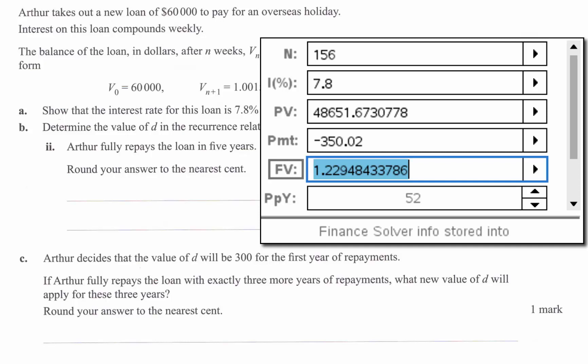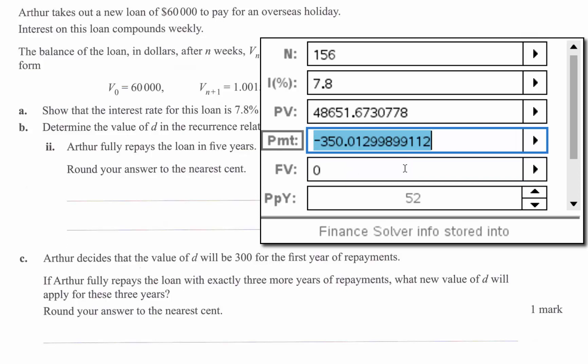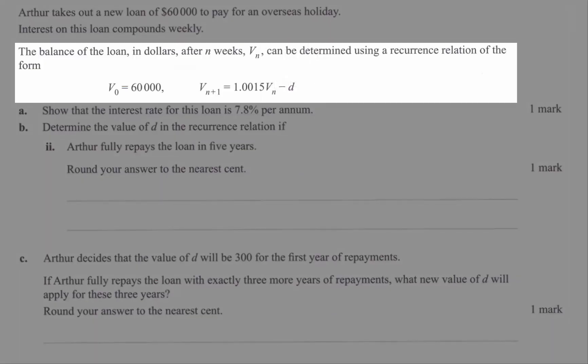So as for what the correct answer is, basically there is no correct answer to this question because it's not like the actual value of D. So I imagine what some people would say is well the true value of D is 350.01299 and you're just rounding it.